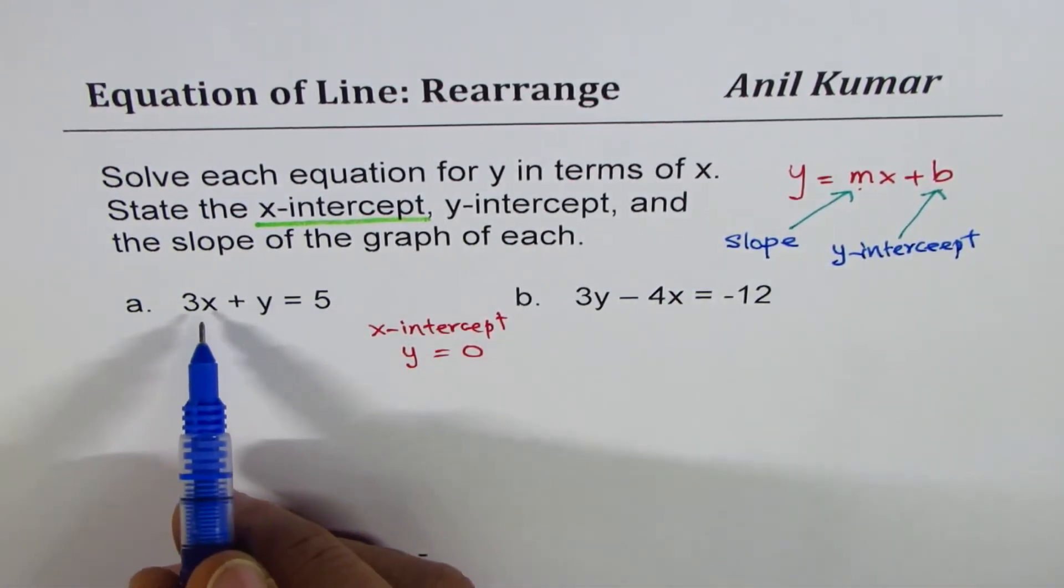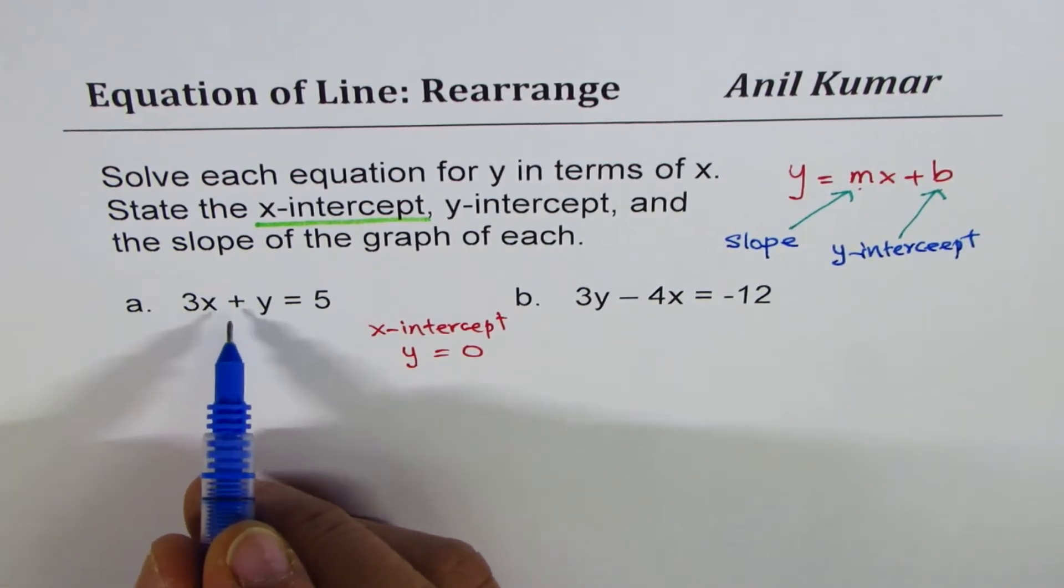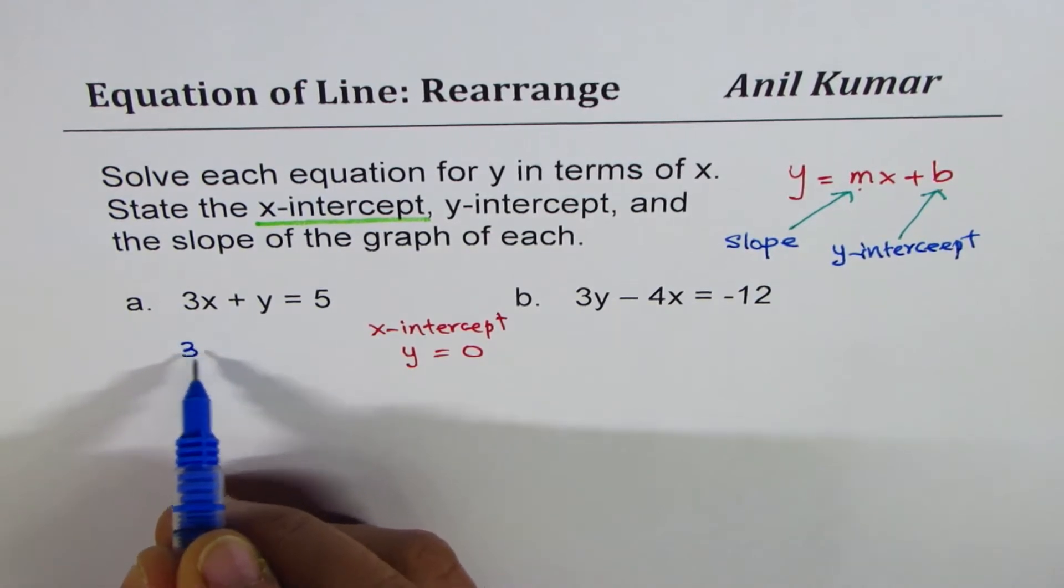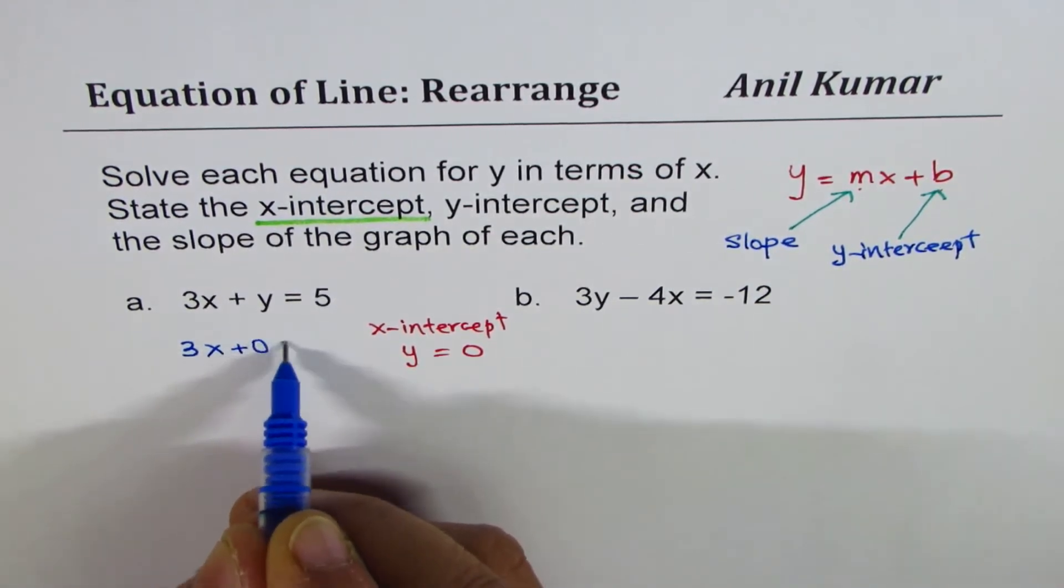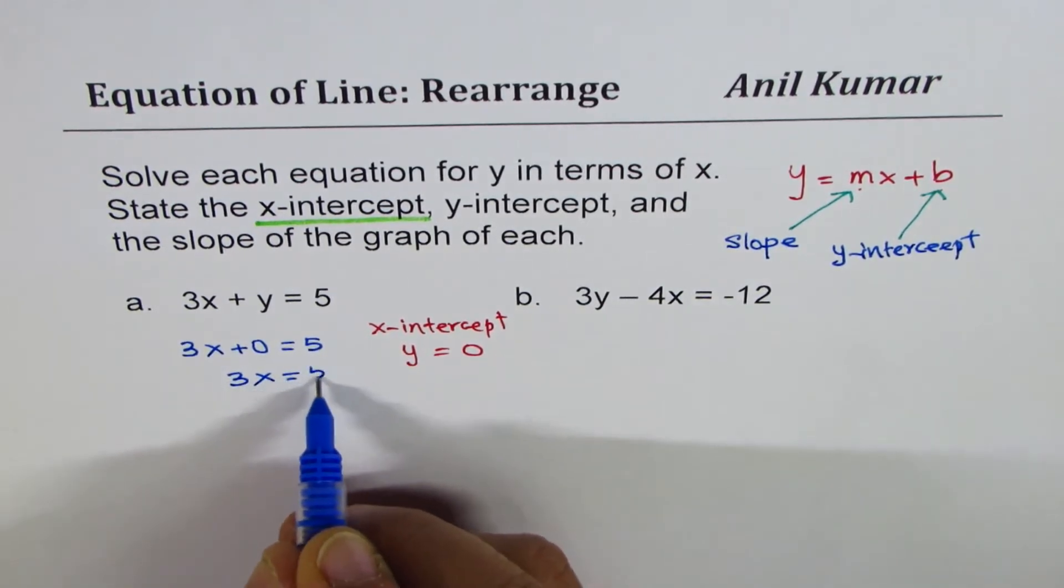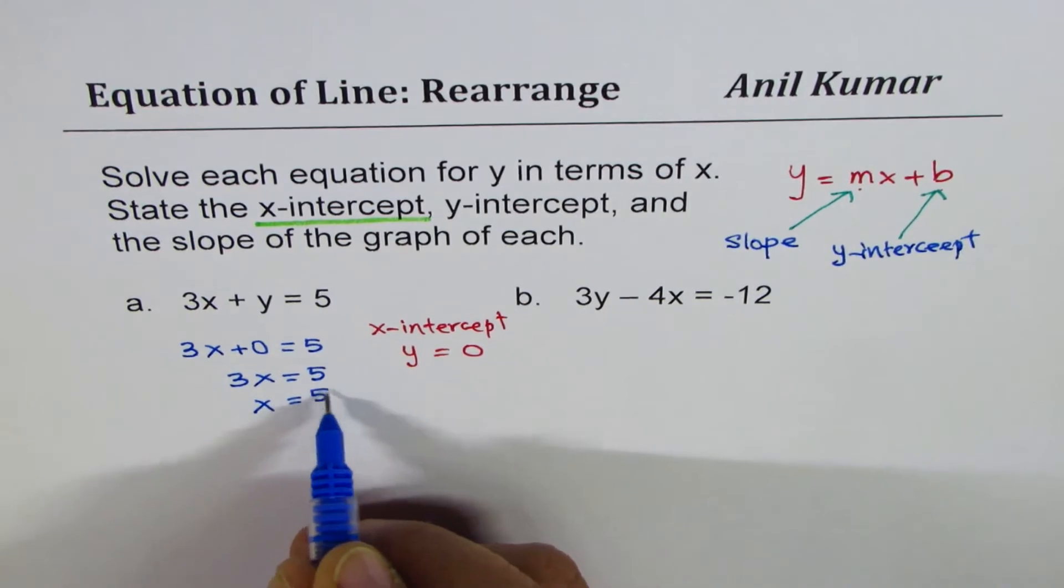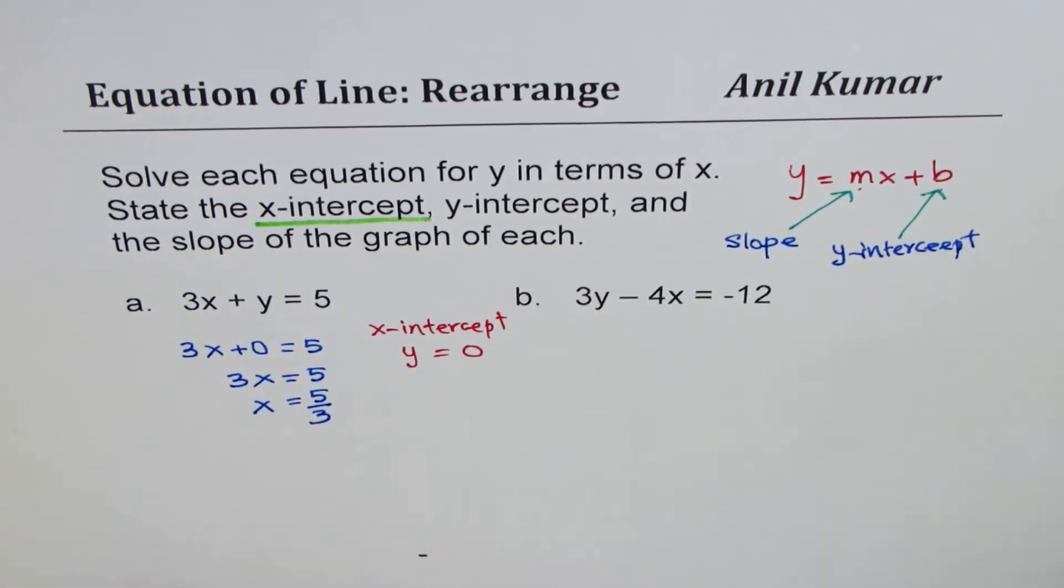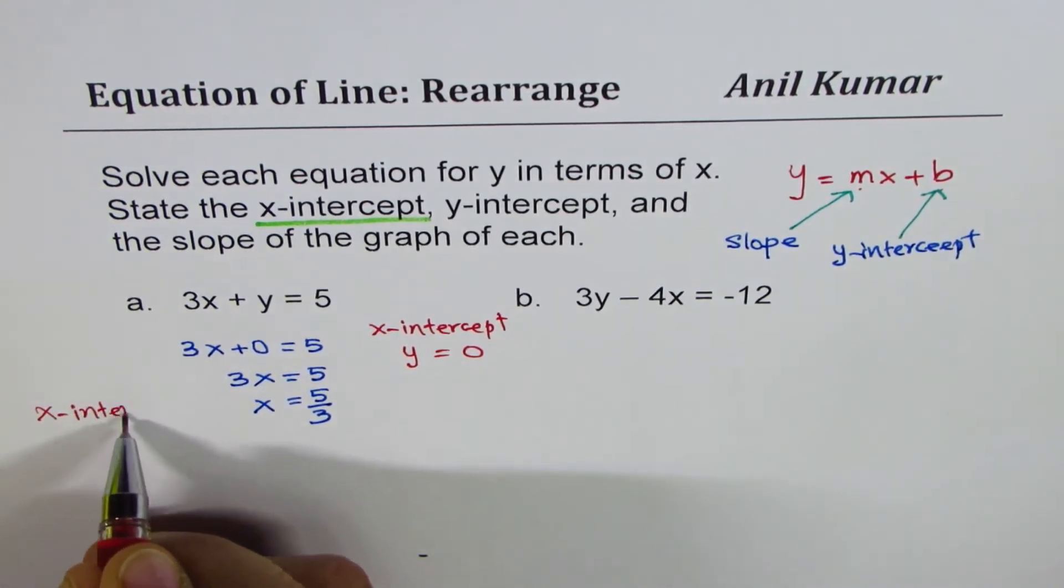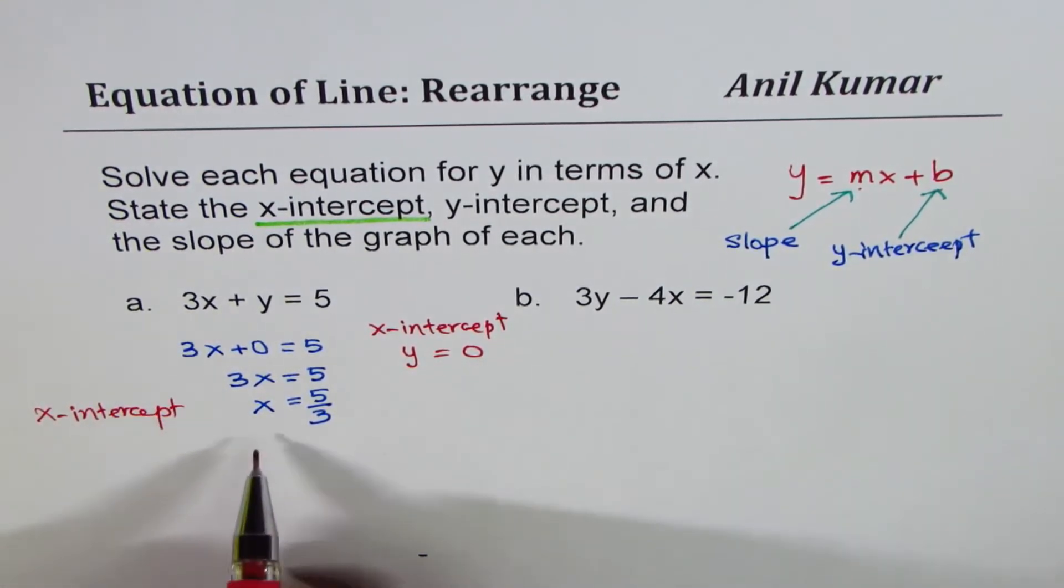Solve for x. In the first equation, 3x plus y equals to 5, we will substitute y equals to 0. So we get 3x plus 0 equals to 5. That means 3x equals to 5, and x equals to 5 divided by 3. So this gives you the x-intercept, which is x equals to 5 over 3.